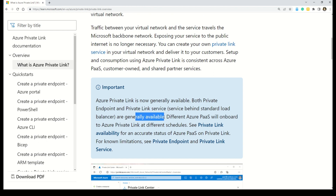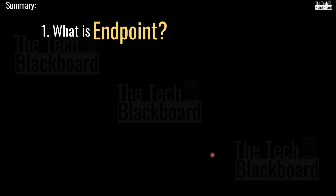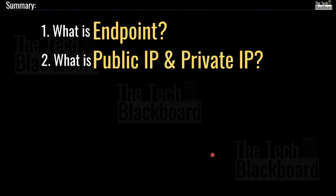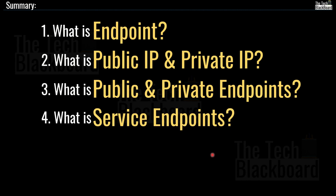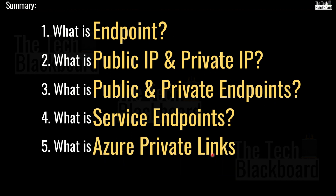The documentation link is in the description box. To summarize today's session: we started with understanding what an endpoint is, with examples to clarify. Second, we covered public IP and private IP. Third, the prime focus was public and private endpoints — their key differences, features, and use cases. In the bonus section, we covered service endpoints as topic four, and finally topic five was Azure Private Links. Links to Microsoft documentation, best practices, and the Azure Private Link FAQ page are all in the description box.